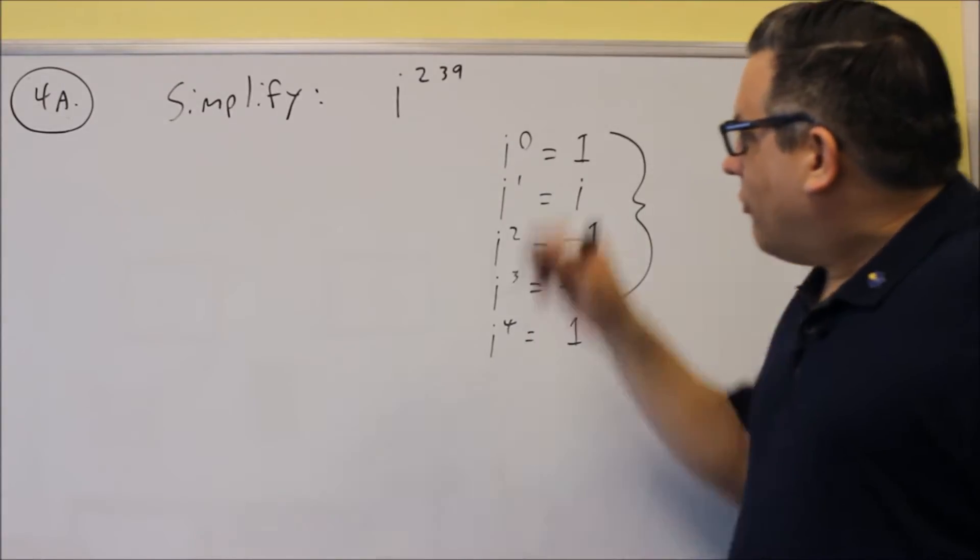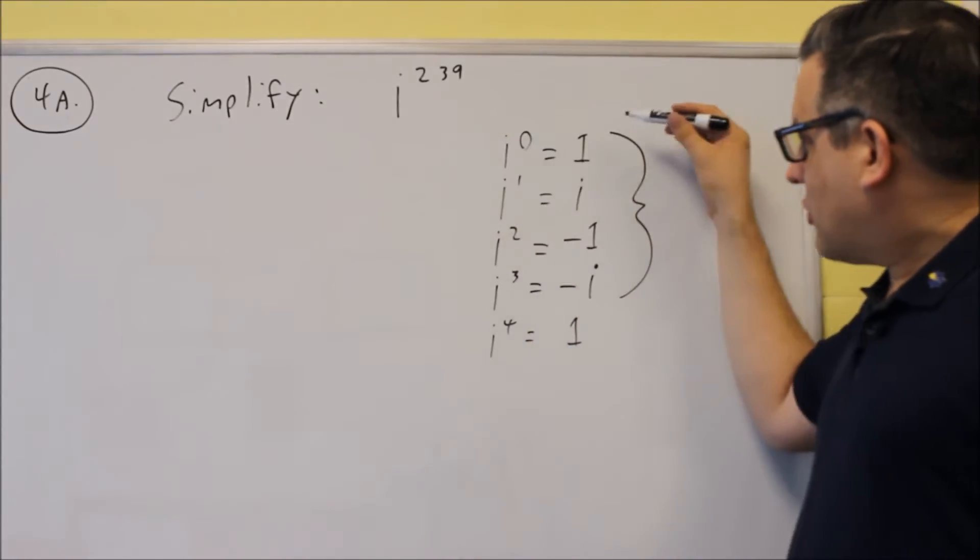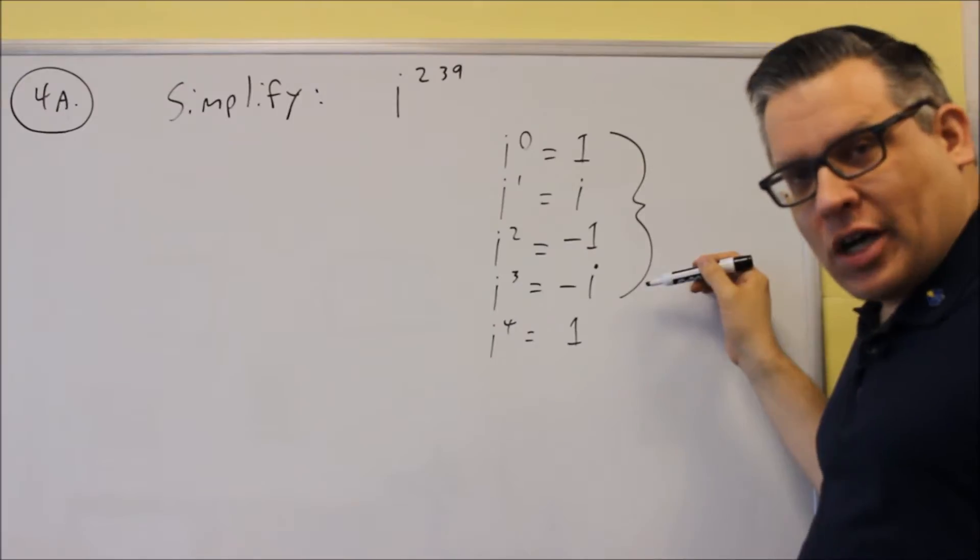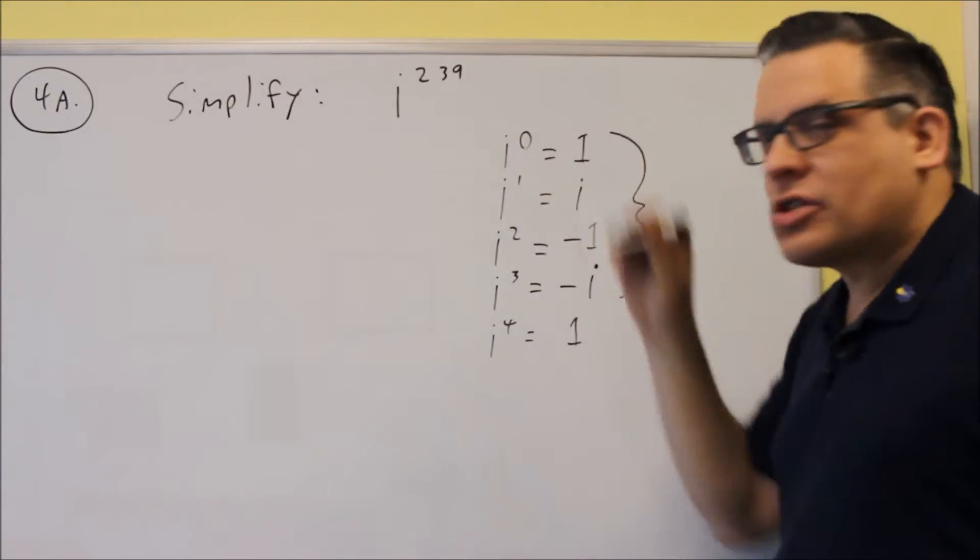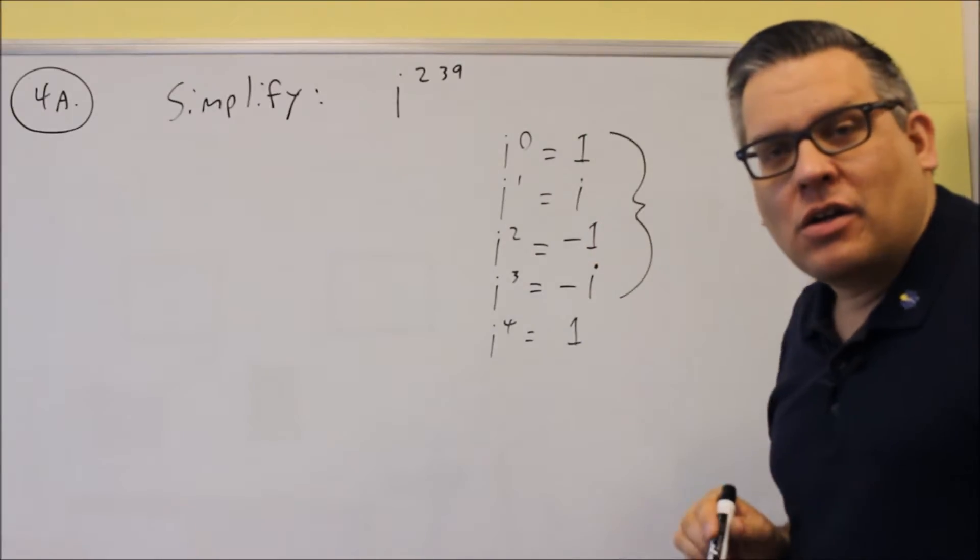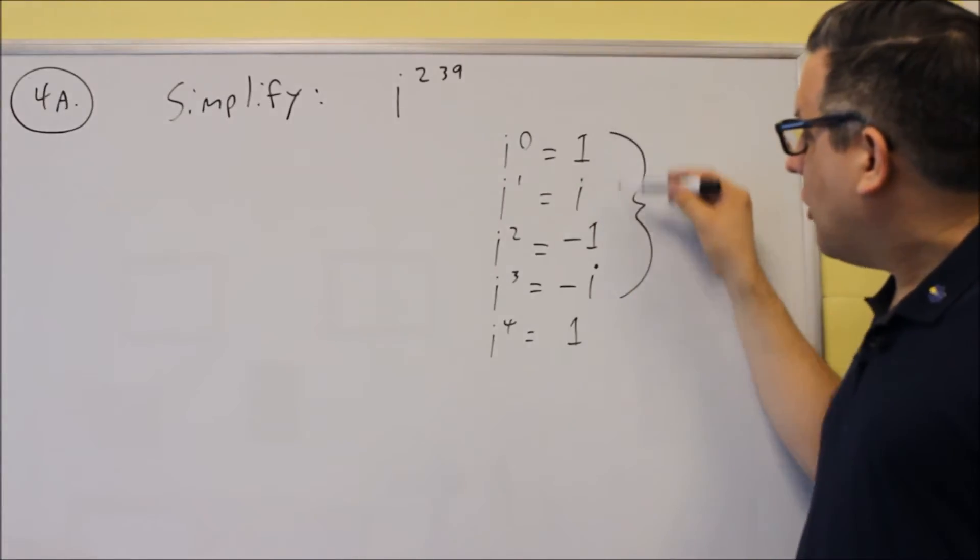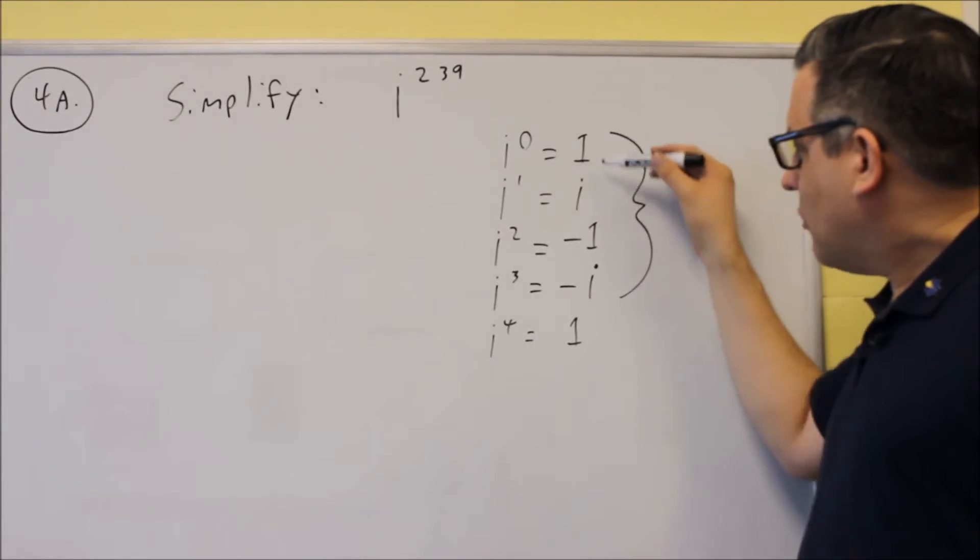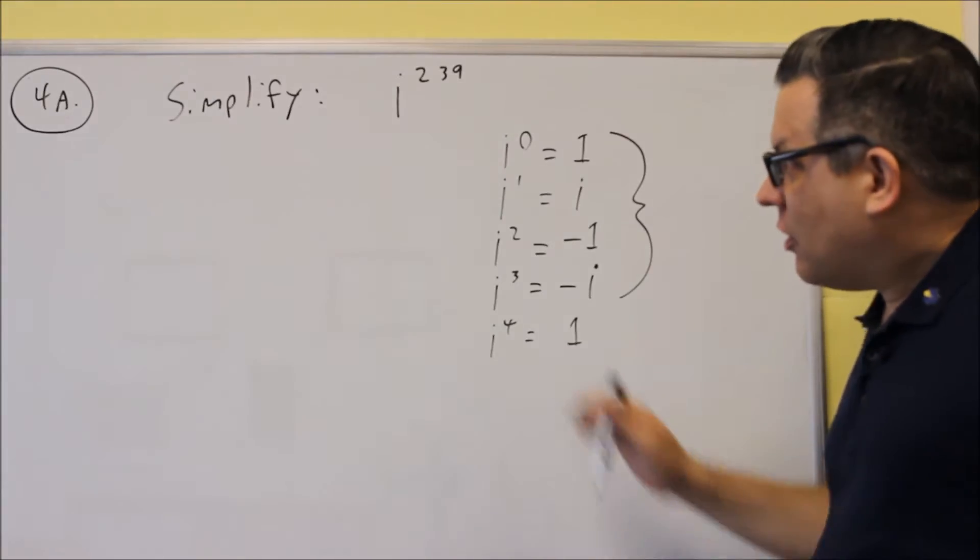So for 239, what we want to do is, since this repeats every 4 times, you're going to take 239 and divide it by 4. These kinds of problems where you're simplifying i to a certain power, you're always going to start by dividing by 4. Every time, divide by 4. The reason why? The pattern repeats every 4 times. The same 4 things would just repeat itself over again.